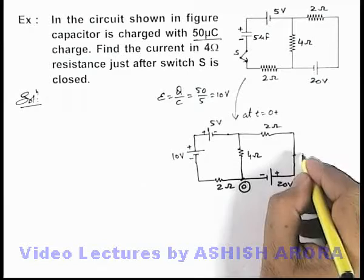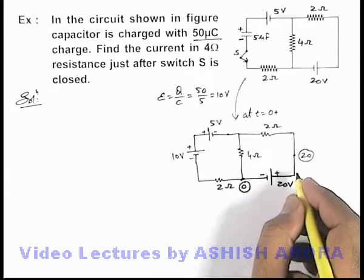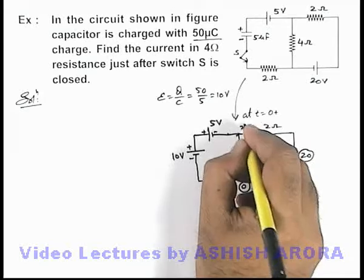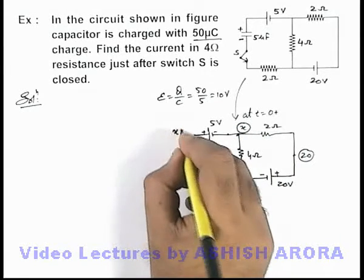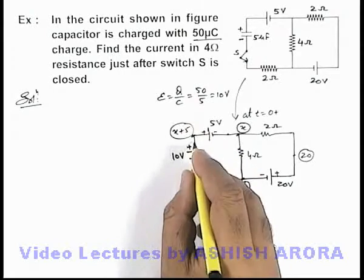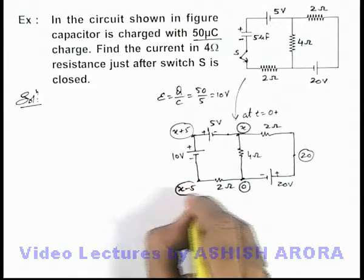Then potential at this side we can consider to be 20 because it'll be 20 volt higher. At this junction if potential is x, then at this point it'll be 5 volt gain so this'll be x plus 5. And now it is 10 volt drop so here potential we can write as x minus 5.